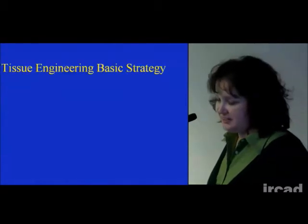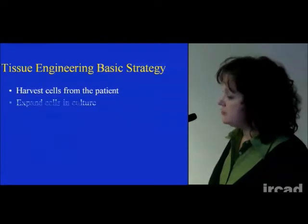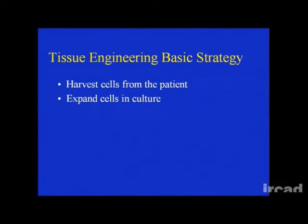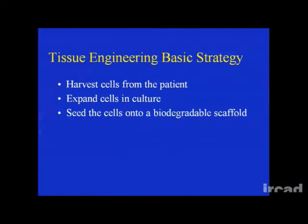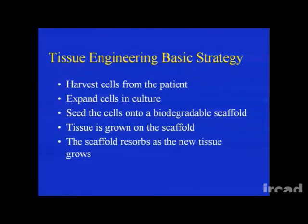The basic strategy for tissue engineering: ideally we'd like to harvest cells from the patient, expand those cells in culture, and seed them into a biodegradable scaffold. That's one of the key points of tissue engineering — all of our scaffold materials are degradable. Tissue is then grown on the scaffold, and when implanted in the body, the scaffold dissolves and new tissue is formed, so there's never an indication that a material had been planted.